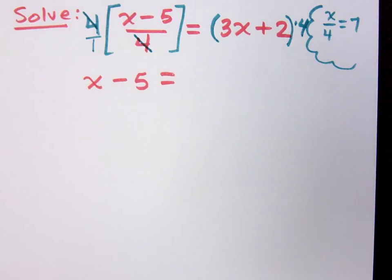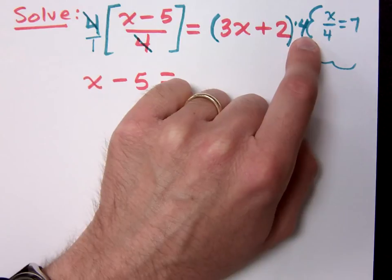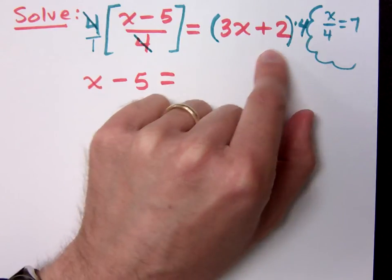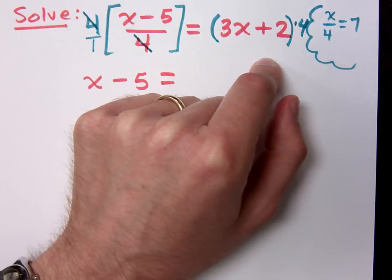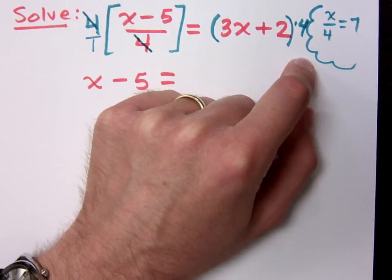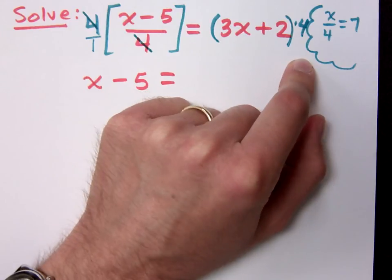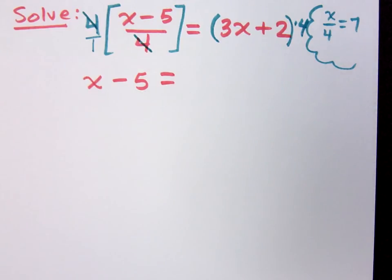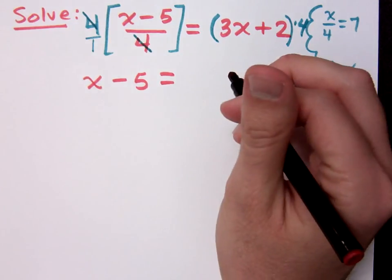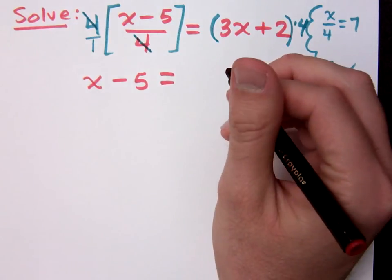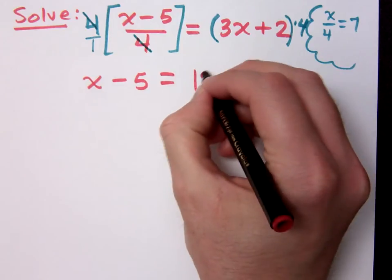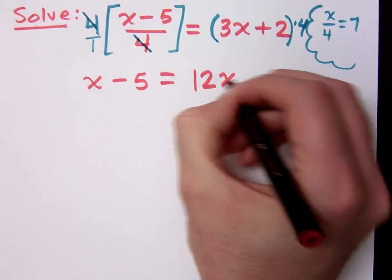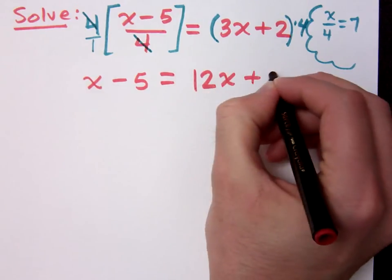On the right side, does this 4 have something to reduce within the denominator? No, there's no denominator — it's understood to be 1. So what I need to do on the right side is distribute. Multiply, distribute — what do we get? 12x plus 8. We get 12x plus 8 when I distribute.